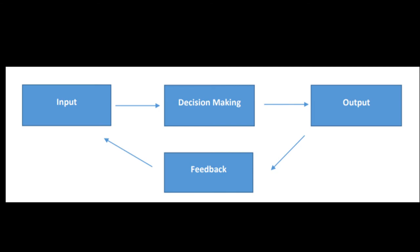The information processing model is on a continuous loop. The sportsperson takes in information from the display, makes a decision, and puts that decision into process before gaining feedback. The feedback given will then impact how the input is perceived in the future. Repeating this process alongside gaining quality extrinsic feedback should result in a performance improving over time.